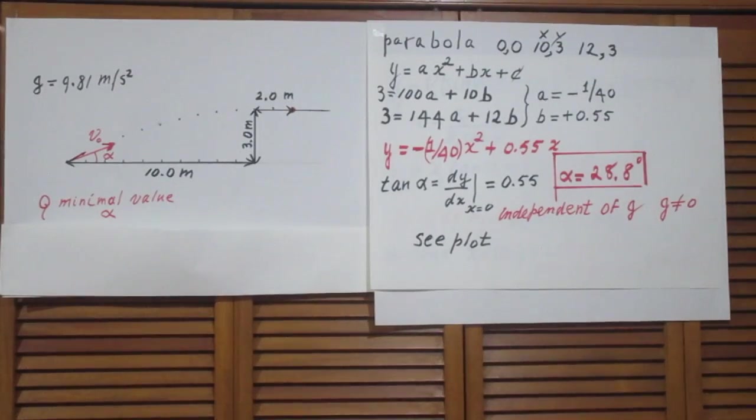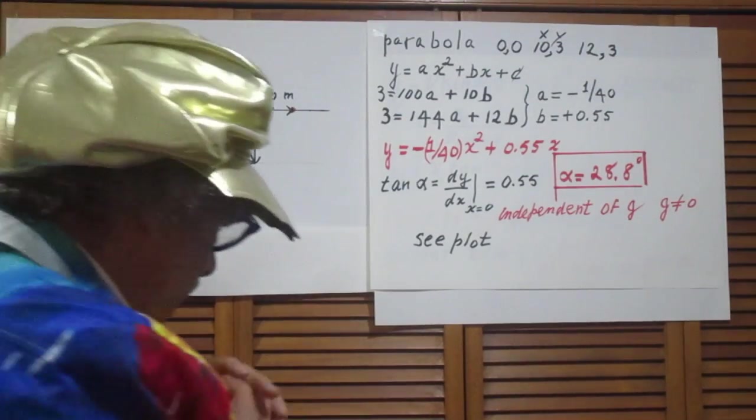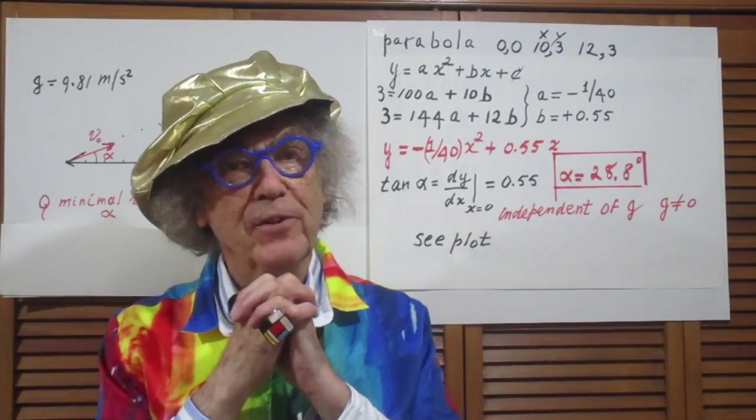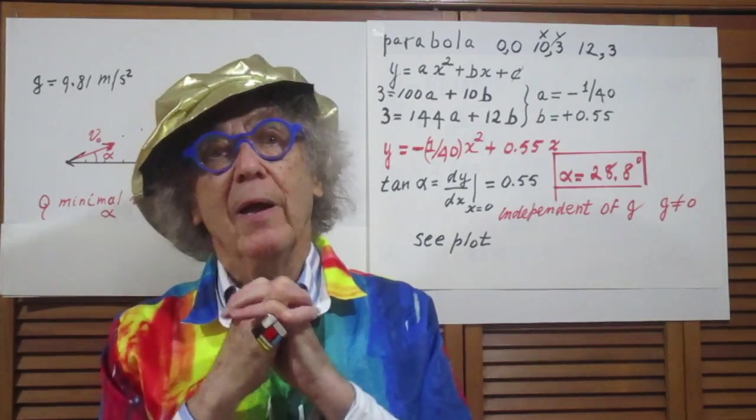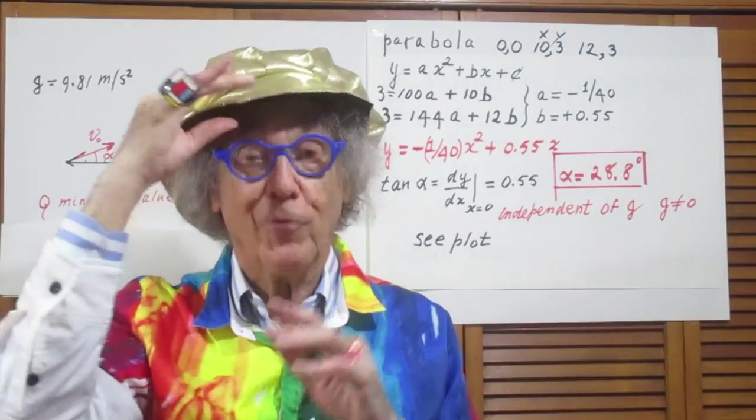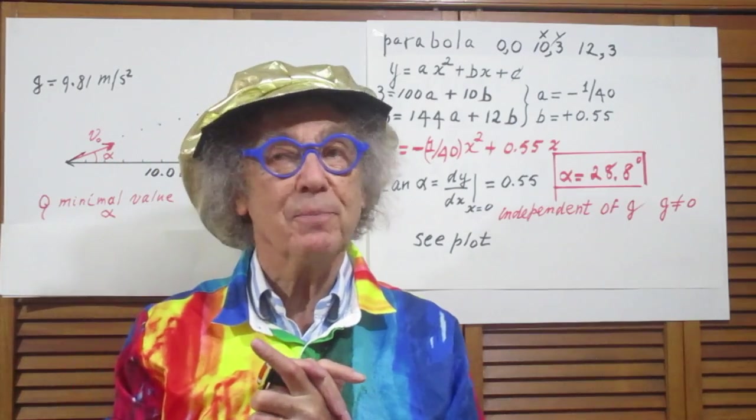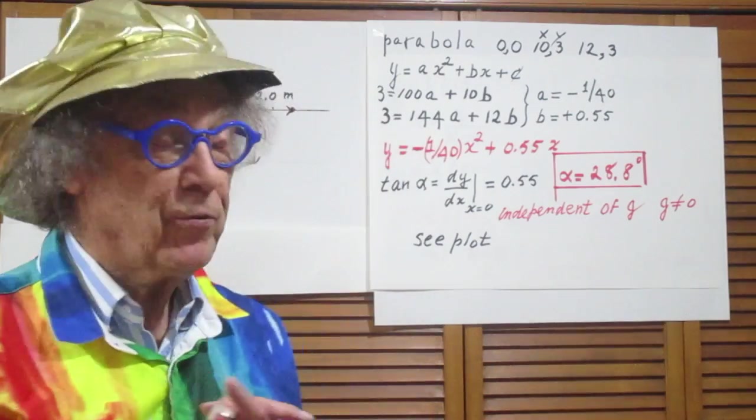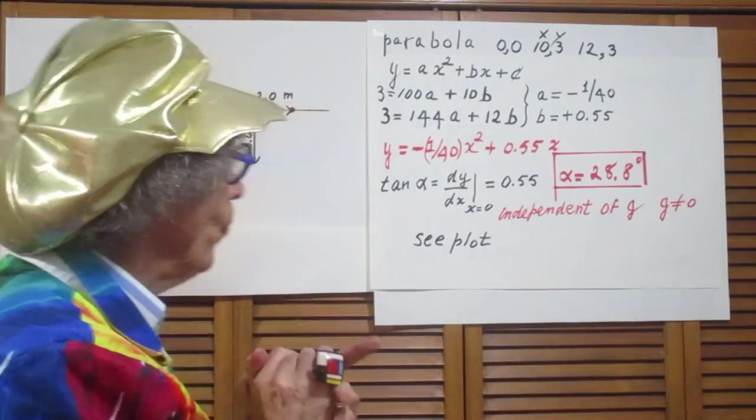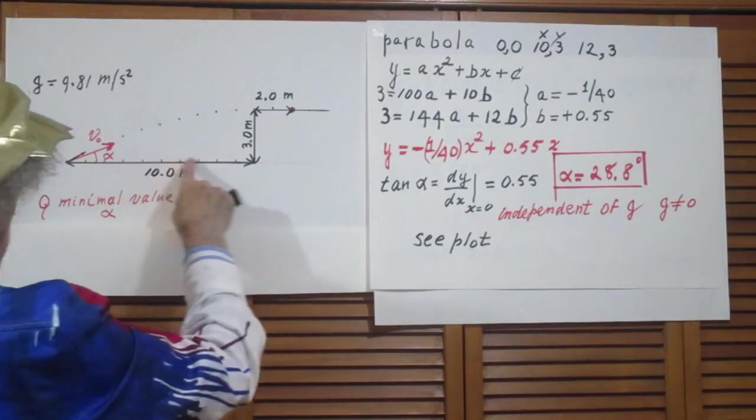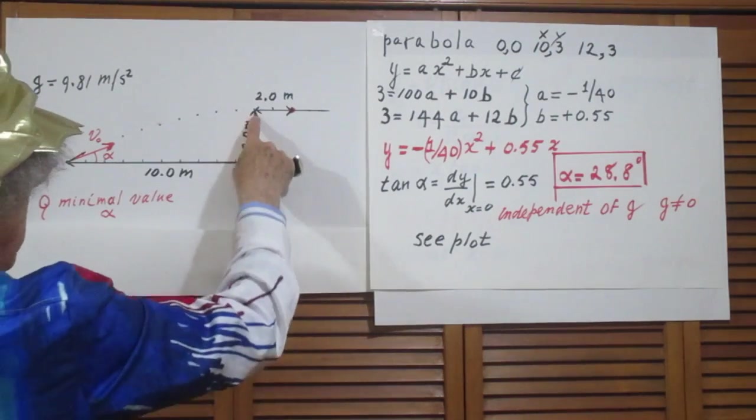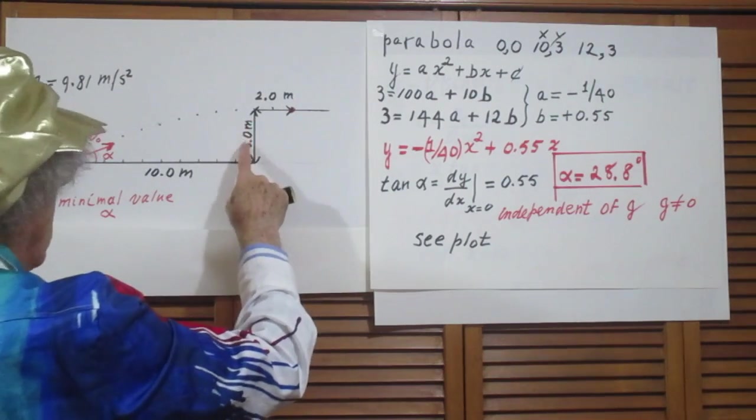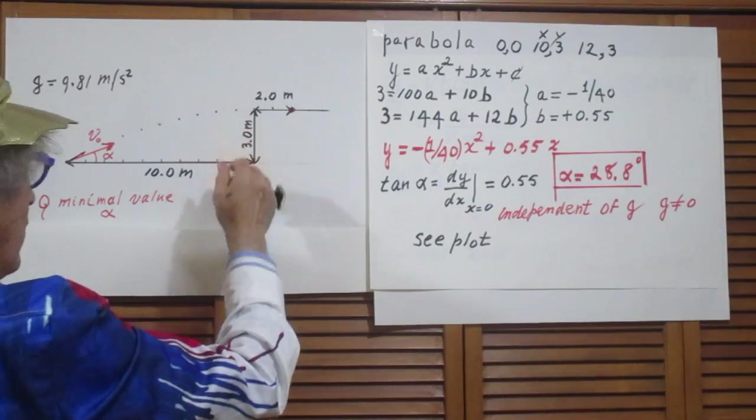Hello, today is June 27, 2021. Yesterday was June 26, I published problem number 113. The problem was as follows: typical high school problem. This is the ground, horizontal, here's a building.